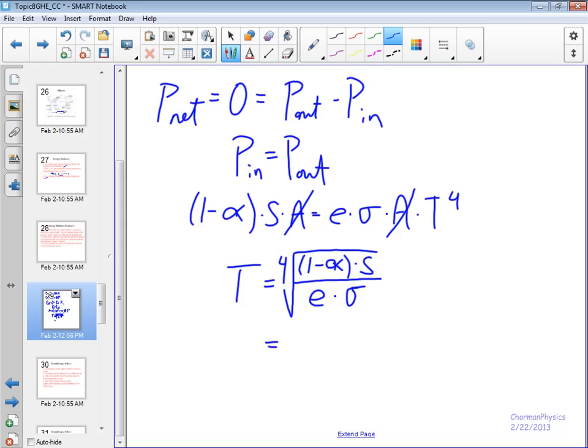We substitute all these values in here. Emissivity equal to 1, albedo equal to 0.3, and solar constant equal to 340 watts per meter squared. We're going to take the Stefan-Boltzmann constant and put it in there too. We get about 254 Kelvin.